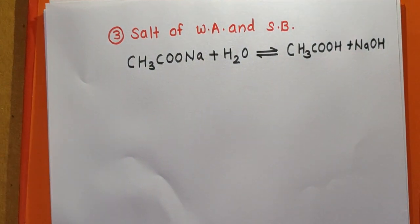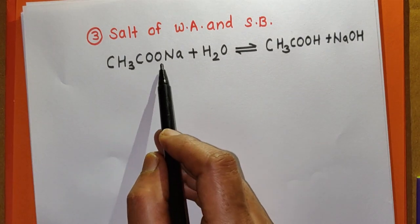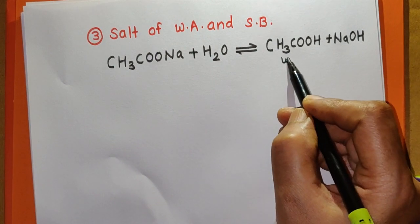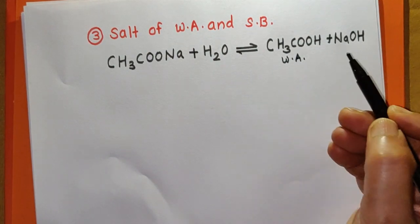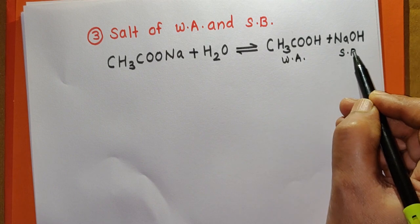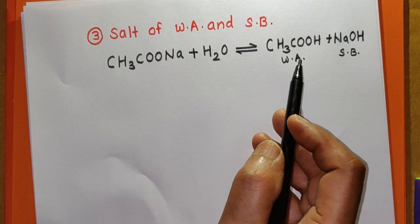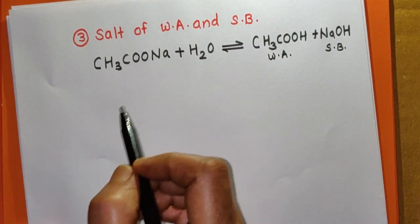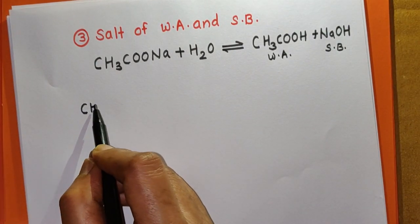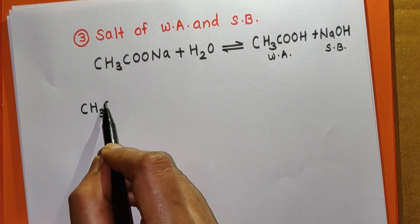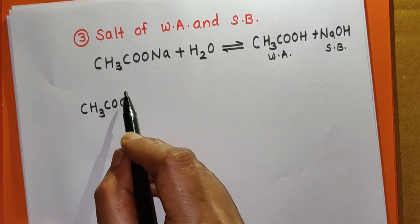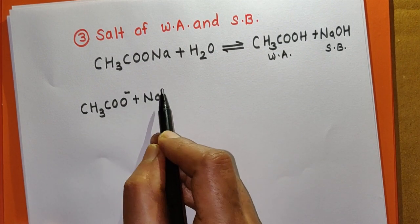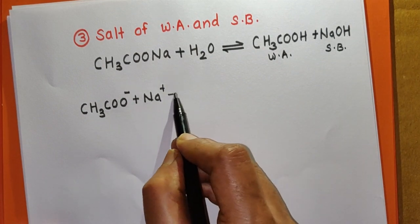So remember: CH₃COONa reacts with water to give weak acid CH₃COOH and strong base NaOH. This is the salt of weak acid and strong base. Since CH₃COONa is a salt, it will completely ionize to give anion CH₃COO⁻ and cation Na⁺, plus H₂O.